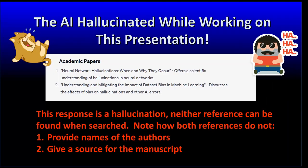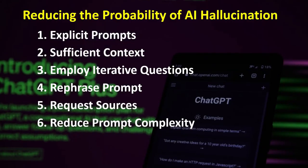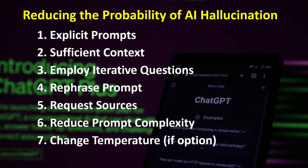When working on this presentation, the AI hallucinated when asked for additional resources on AI hallucinations. Note: the supplied references do not list an author and the source of the reference — neither citation is real. 6. Reduce prompt complexity — the more complex a prompt is, for example asking multiple questions, the higher the probability of a hallucination. And finally, 7. Change the temperature — some platforms allow users to change the temperature of the model; lowering the temperature will reduce randomness of the model's output.